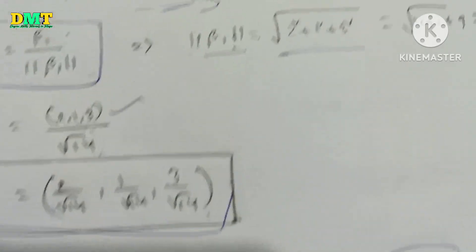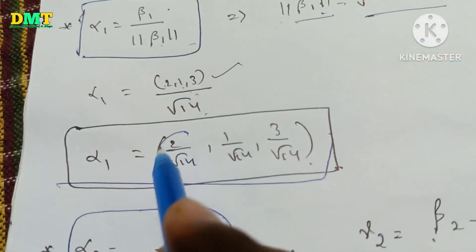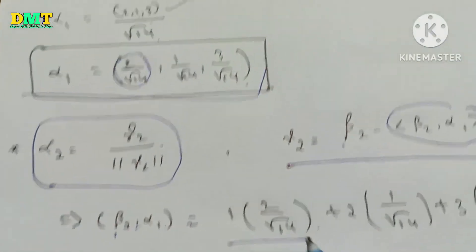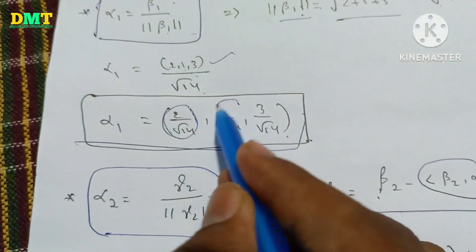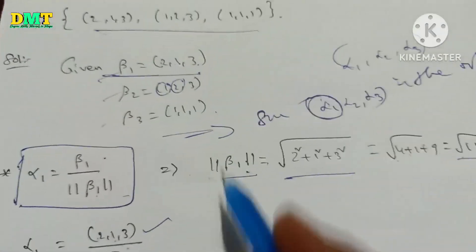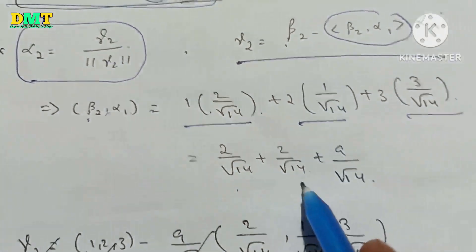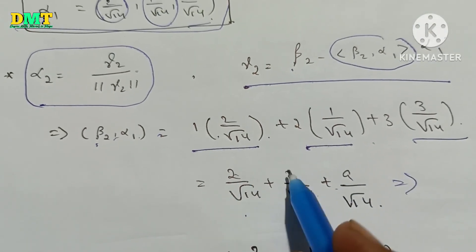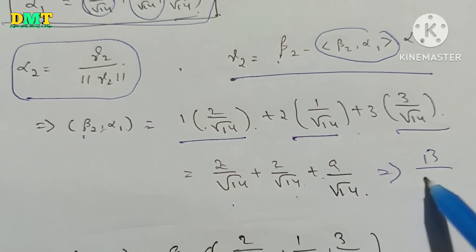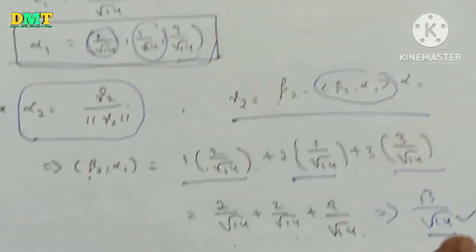Beta2 comma alpha1 equals beta2 dot alpha1. The first value is 1 times alpha1's first component 2/root14. Multiply. Next, second value 1/root14. Multiply. Next, 3 times 3/root14. Multiply. So we get 2/root14 plus 2/root14 plus 9/root14, which is 13/root14. So we have the beta2 comma alpha1 value.